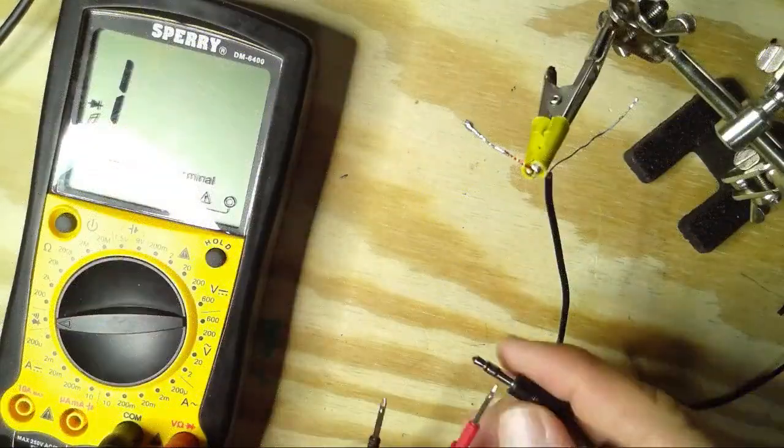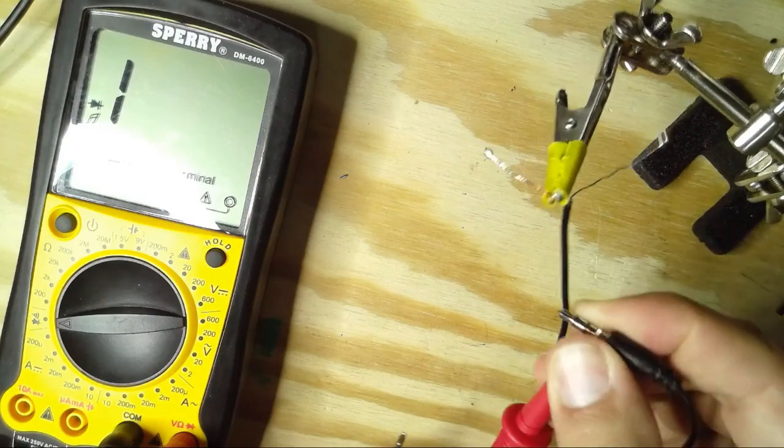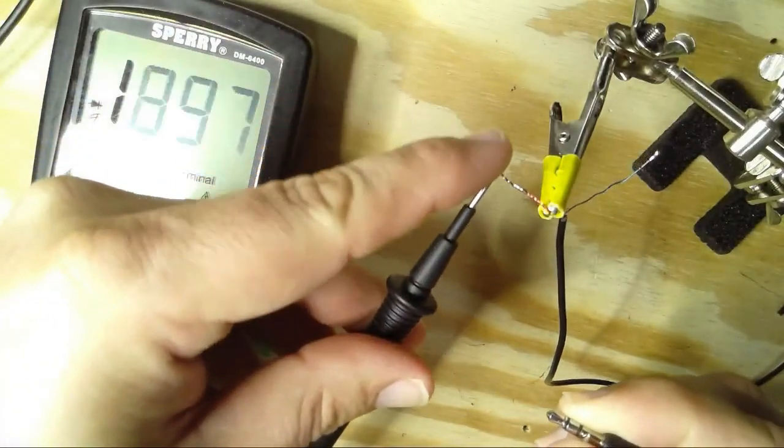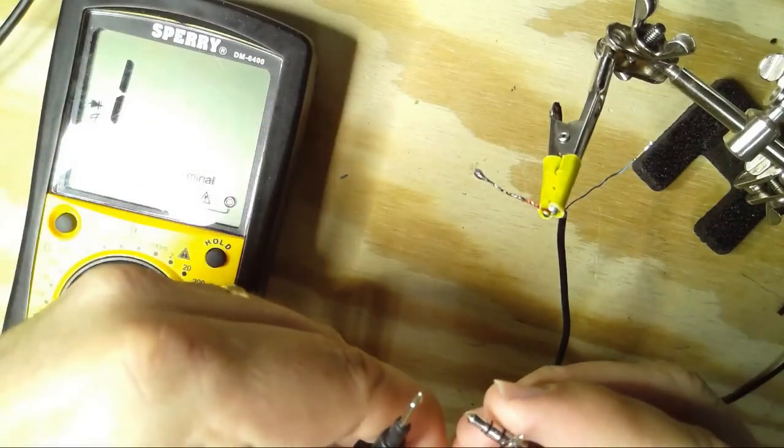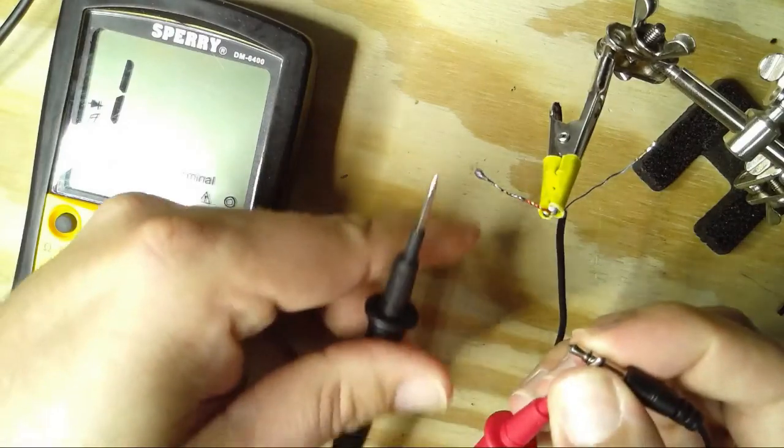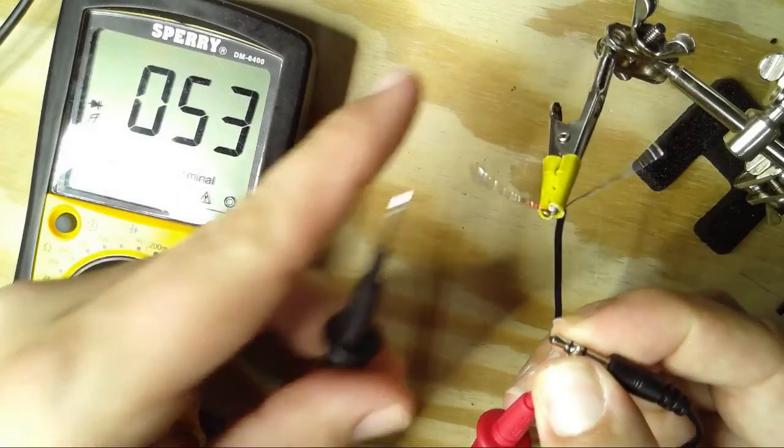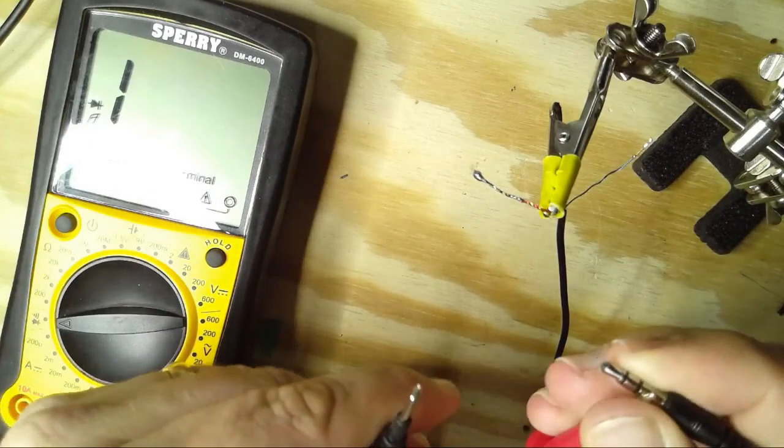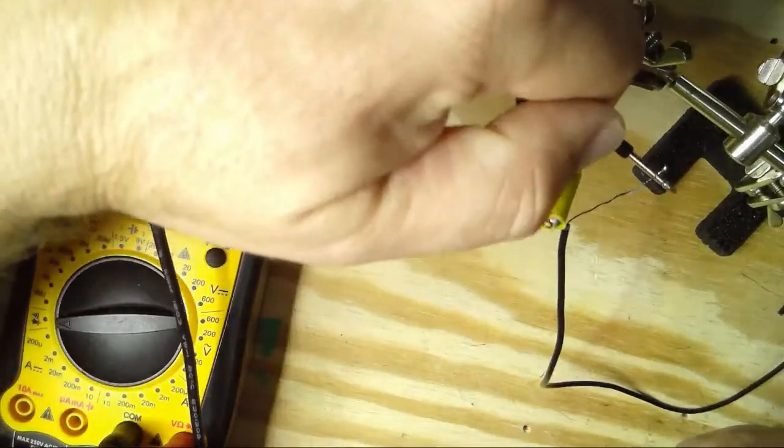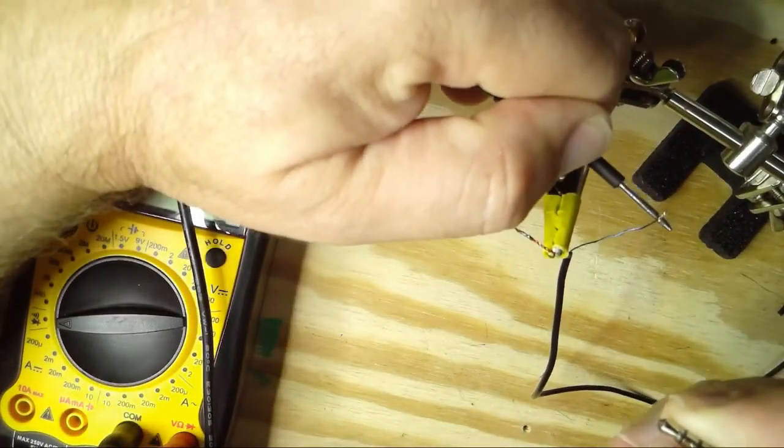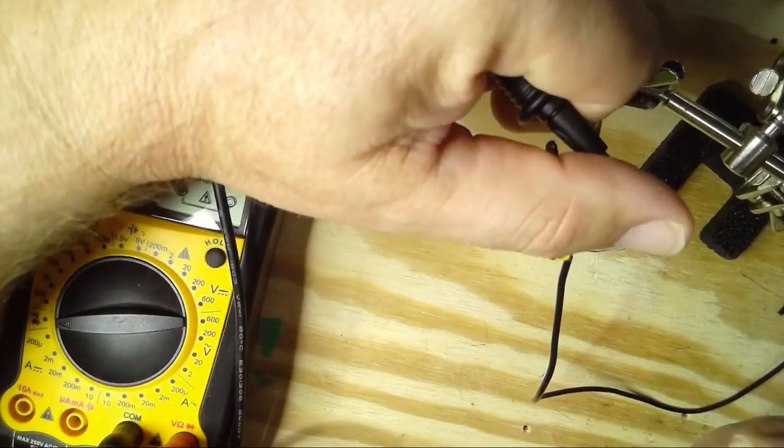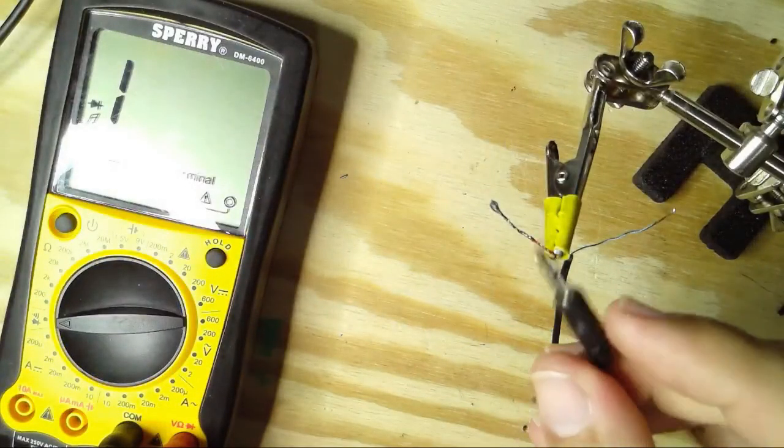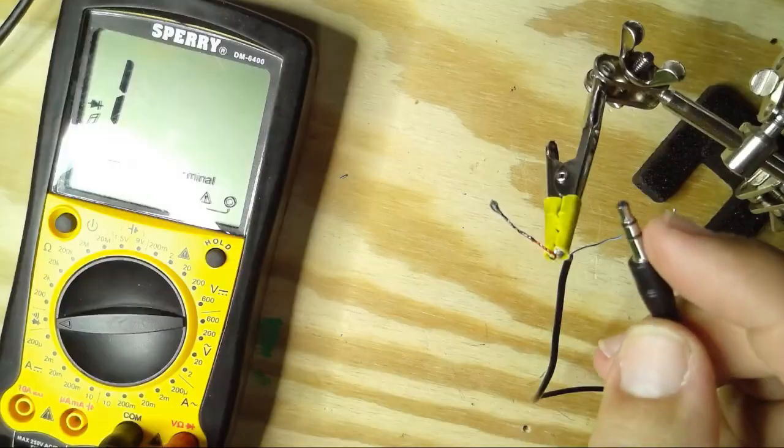To test that, we'll hold one of our leads to the sleeve and touch the other one here. We'll also test it against the ring. And that's good. Now what we also have to double check is that we didn't somehow screw up and short this out completely. So we'll check over here to make sure our tip is still only connecting at the tip. So basically what we just did is we converted this to a mono plug.